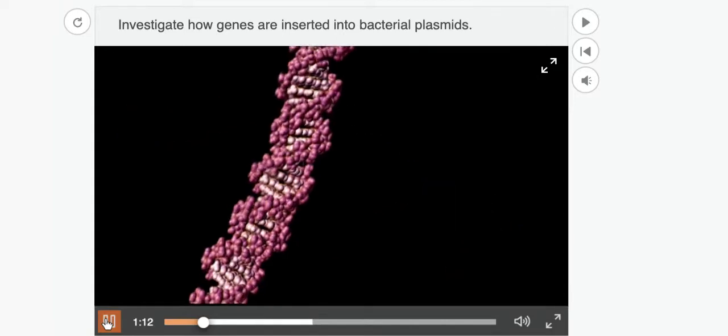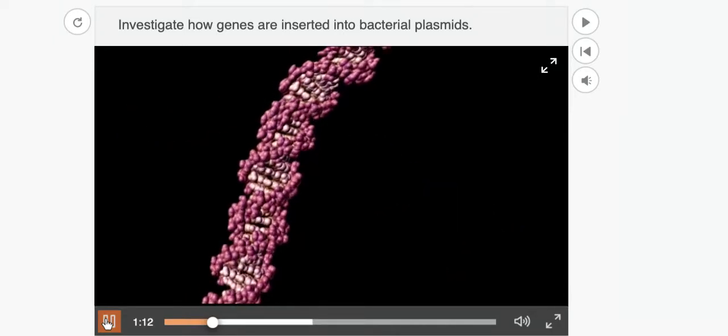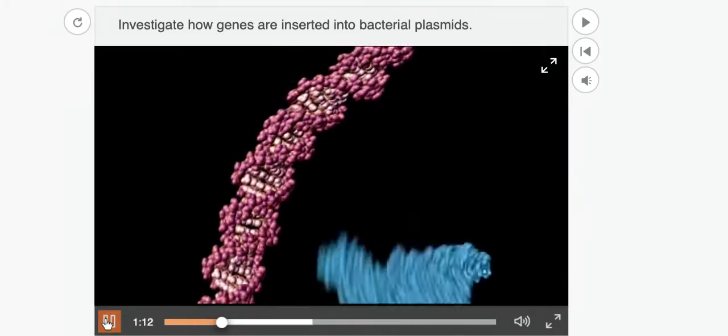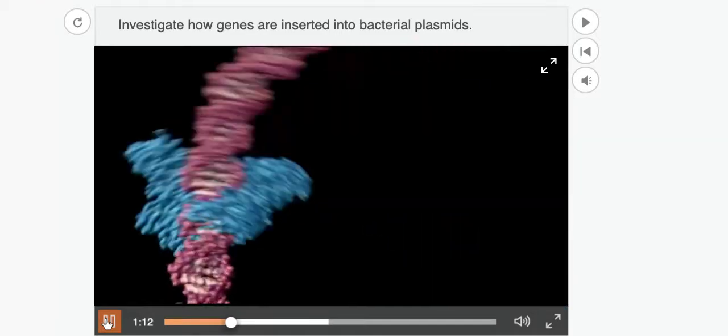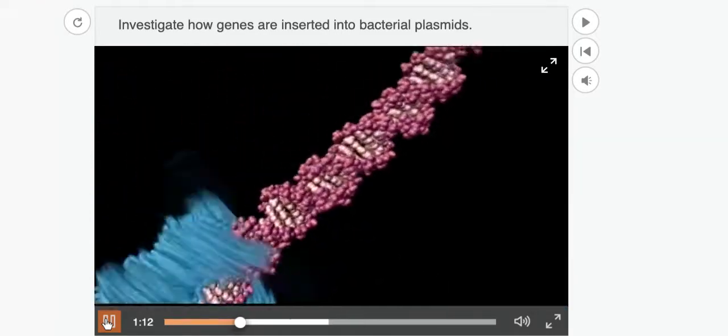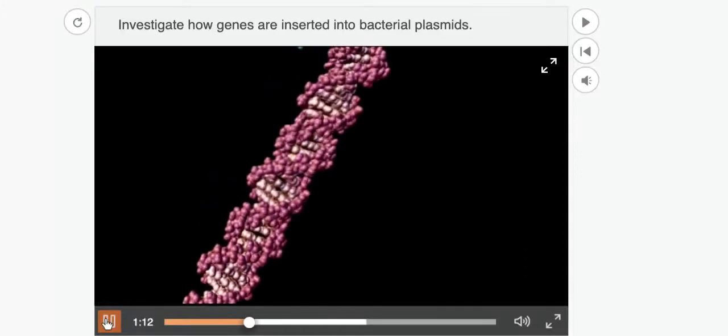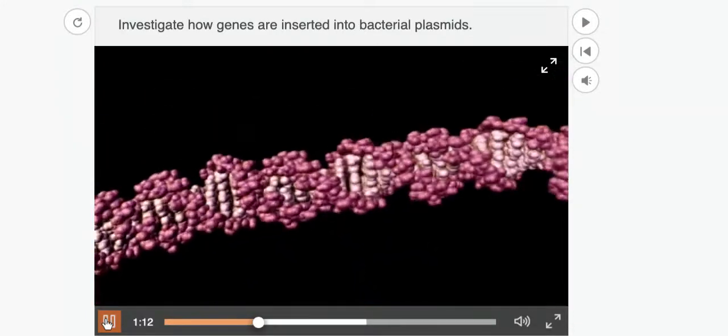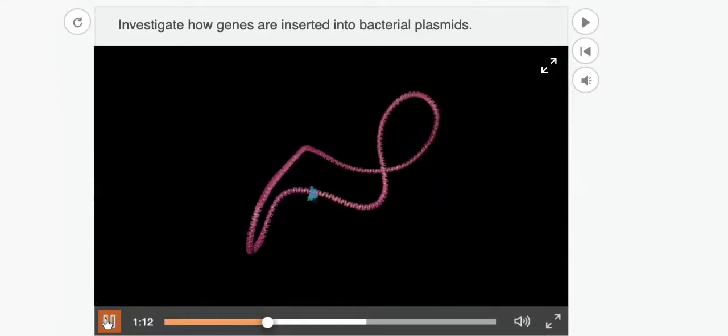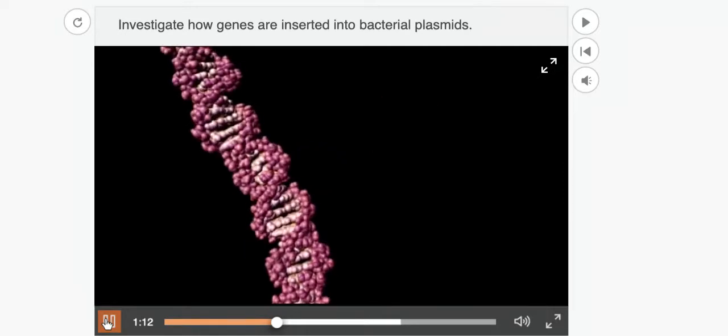The molecular tool used to cut DNA is a restriction enzyme such as ECO-R1. The enzyme has a precise shape that allows it to run along the groove of the double helix, scanning, in the case of ECO-R1, for the base letter sequence G-A-A-T-T-C.